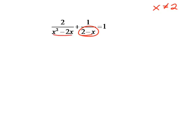For this one, we do need to factor it. We have x times x minus 2. So x can't be 0 or 2.